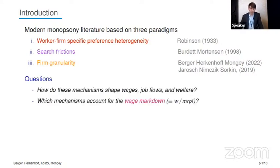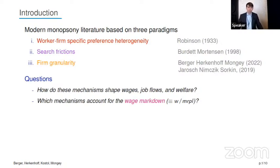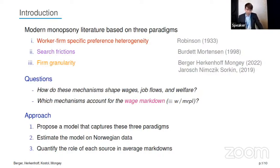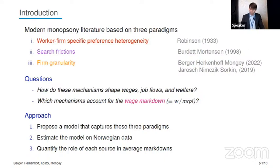What we're going to do in this paper is ask how these three separate mechanisms shape wages, job flows, and worker welfare. We're going to ask which of these mechanisms account for the wage markdown, which we define as the gap between what a worker's paid and their marginal revenue product of labor. We propose a model that captures all three paradigms, estimate it on matched employer-employee data from Norway, and then quantify each source's contribution to average wage markdowns. In the conclusion, I'll tell you how this can help guide policy.